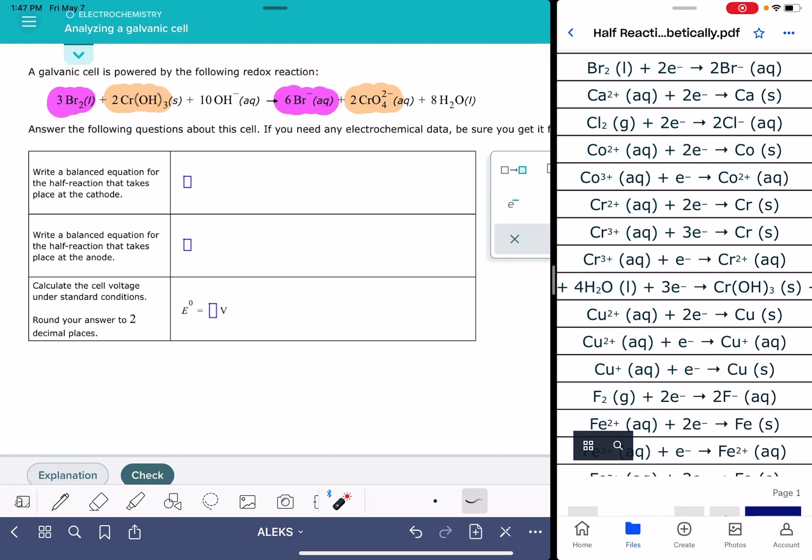Br2 liquid turning into Br minus ions, and this even has the electrons built into it for us. So for this, all that we have to do is copy this exactly the way that it's written down in here into the correct spot. Before we copy, because we've got two different places to put it, we've got to make sure we get it in the right spot. Cathode, our trick to help us remember is red cat, so that's telling us that the reduction is taking place at the cathode.